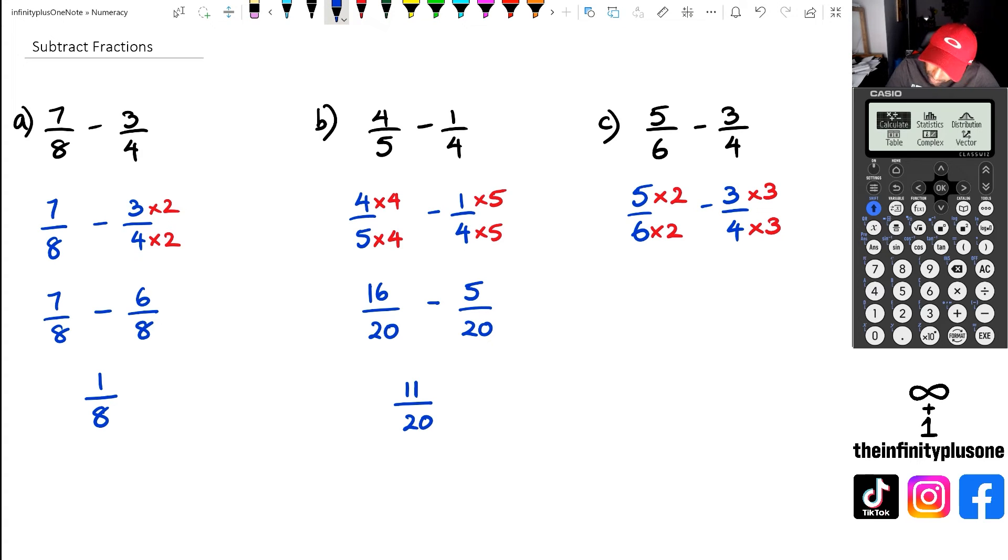So when we do this, we've got 5 times 2, which happens to be 10, 6 times 2, which is 12, minus 3 times 3, which is 9, 4 times 3 is 12. And as you can see, the denominators are the same, which means we can now subtract the numerator. So we've got 10 take away 9, which is going to equal 1.